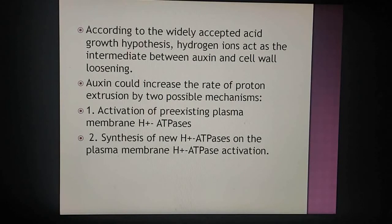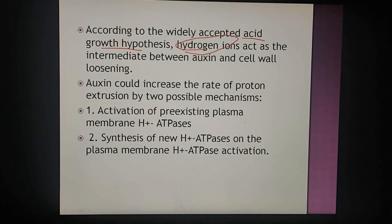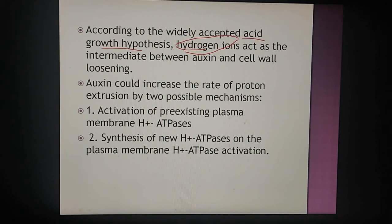For this action, a widely accepted hypothesis is the acid growth hypothesis. According to this, hydrogen ions play a very important role in cell wall loosening, and auxin increases the rate of proton pumping by two mechanisms: activation of pre-existing plasma membrane proton ATPase, or increasing the production of new H⁺-ATPase on the plasma membrane.